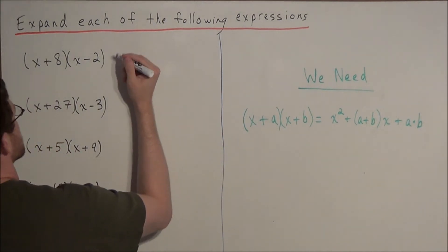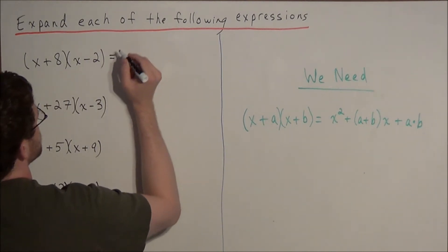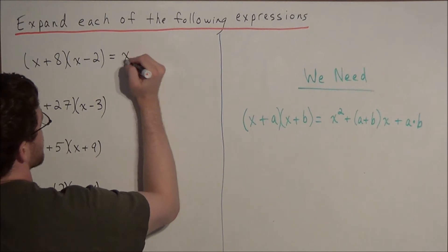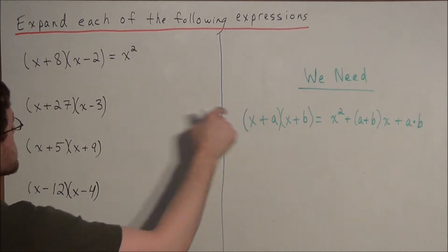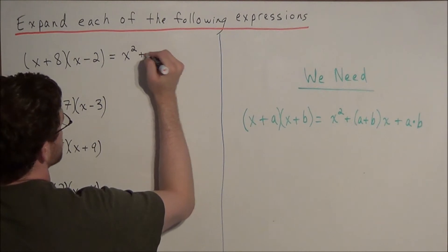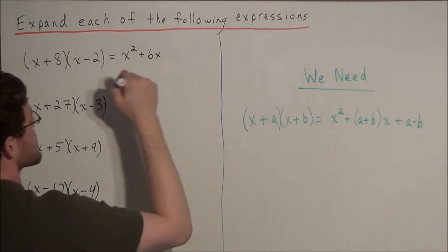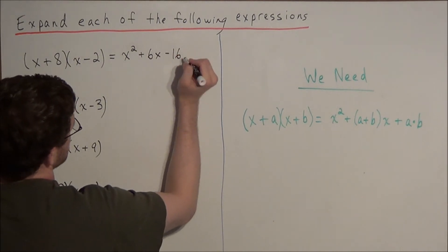So let's say we have x plus 8, x minus 2, well we can start off with x squared, but now we want to know what's going to go in front of our x. Well we're going to add the a and the b terms. So we have 8 plus negative 2, or simply 8 minus 2 is a positive 6. So this tells us we have a positive 6x, and now we have 8 times negative 2 is minus 16.